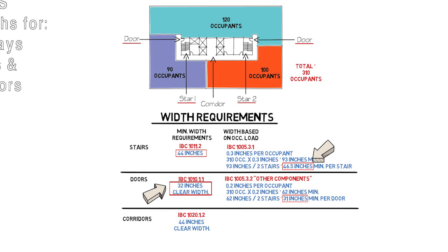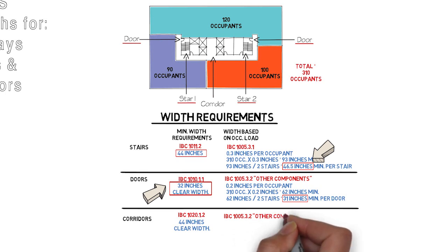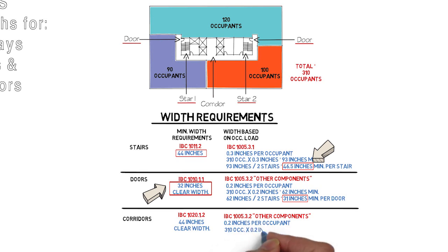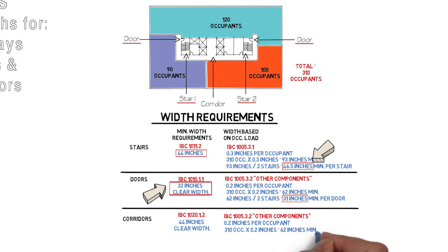Now let's proceed to calculate the required width based on occupant load. The occupant load factor falls under the same section as doors — the 'other components' section in IBC 1005.3.2. That code states that we need 0.2 inches per occupant, and we've already assessed that the calculation is 310 occupants times 0.2 inches equals 62 inches minimum. Since this is a single corridor used by all occupants to access the exits, the width of the corridor has to be the full 62 inches and not split in half.